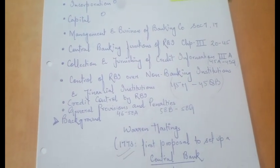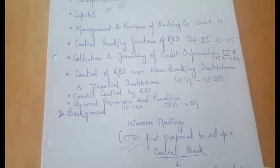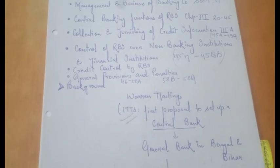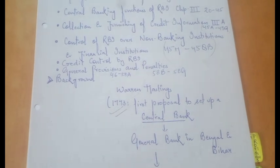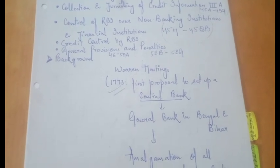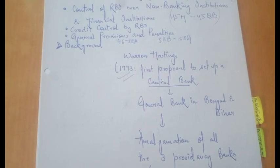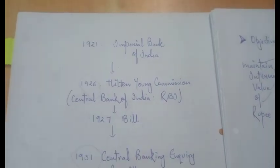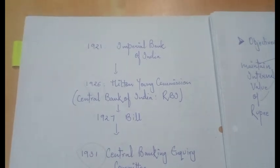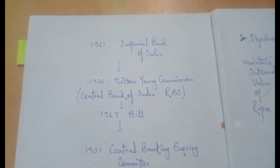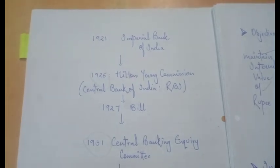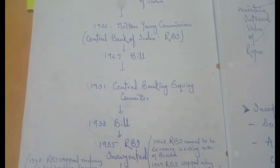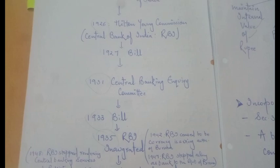Let's start with the background — how did the RBI Act come into picture. Warren Hastings was the first to propose the setup of a central bank in 1773. Thereafter, the General Bank in Bengal and Bihar came into existence, and then all three presidency banks were amalgamated in 1886. In 1921, the Imperial Bank of India came into picture, which was followed by the Hilton Young Commission, which proposed that RBI should be the central bank of India. A bill was proposed in 1927, and in 1931 the Central Banking Inquiry Committee came. Another bill followed in 1933, which led to the final inauguration of the Reserve Bank of India.